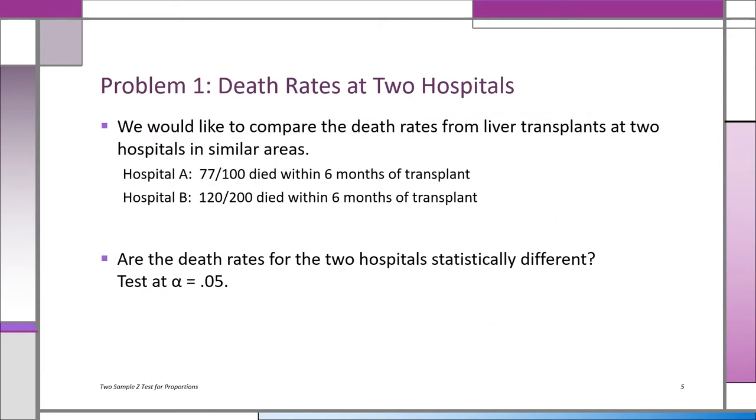Problem number one: we're comparing death rates at two hospitals. We've been looking at liver transplants in two similar hospitals in similar areas, and we notice in hospital A, 77 out of 100 people died within six months of getting that liver transplant. In hospital B, it's 120 out of 200. Clearly you're comparing two proportions.